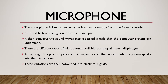Microphone. The microphone is a transducer that converts energy from one form to another. It is used to take analog sound waves as input, then converts the sound waves into electrical signals that the computer system can understand. There are different types of microphones, but they all have a diaphragm — a piece of material such as paper or aluminum that vibrates when a person speaks into the microphone. These vibrations are then converted into electrical signals.